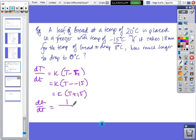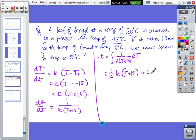Then we flip, dt/dT equals 1/(k(T + 15)). So t equals the integral of 1/(k(T + 15)) with respect to T, so we get (1/k) ln(T + 15) plus the constant. When t equals 0, temperature was 20, so 0 equals (1/k) ln(35) plus c.